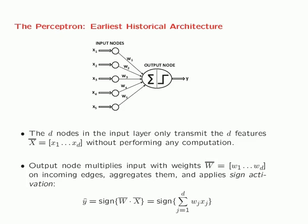You have an output node at which the computation is performed. At the input nodes, no computation is performed — all they do is transmit the inputs. The output node takes those inputs, multiplies them by the weight on the edge joining the input and the output node, and adds them up. There is a summation sign within the output node indicating addition, and a sign activation function. So it takes the dot product of the inputs with the weight vector, then takes the sign: if positive, it predicts plus one; if negative, it predicts minus one. That's how it gives binary label predictions.